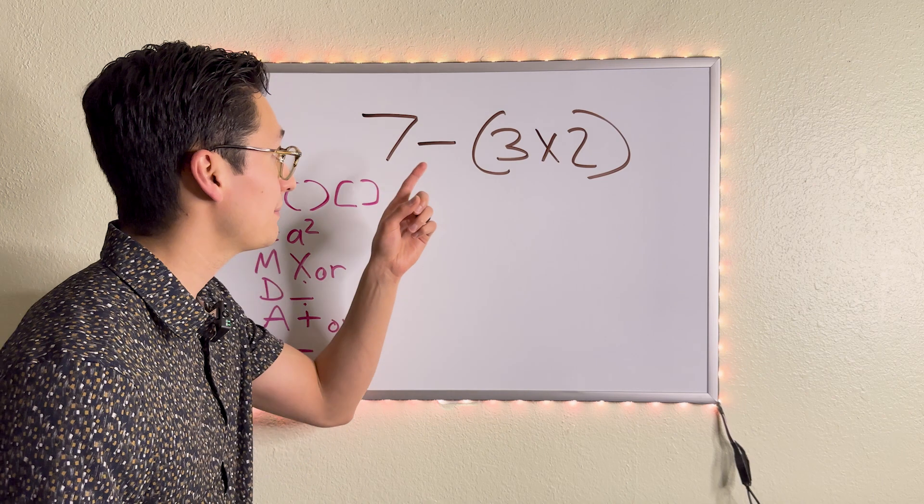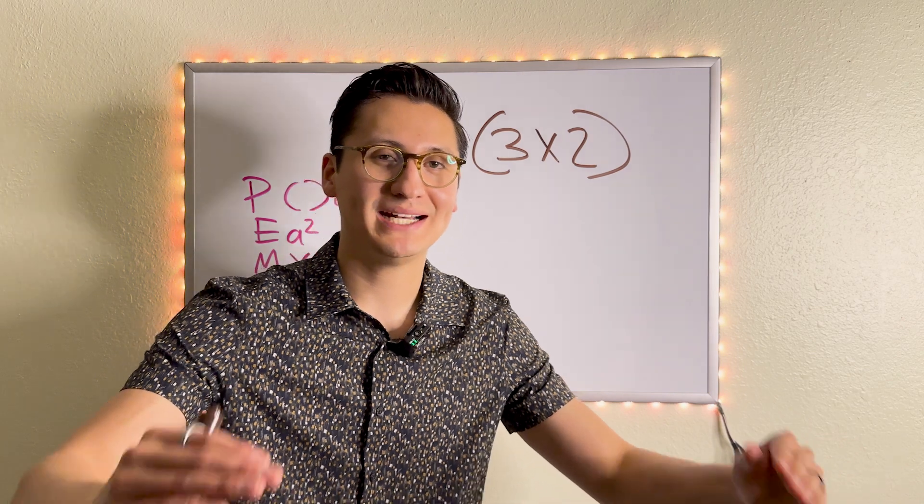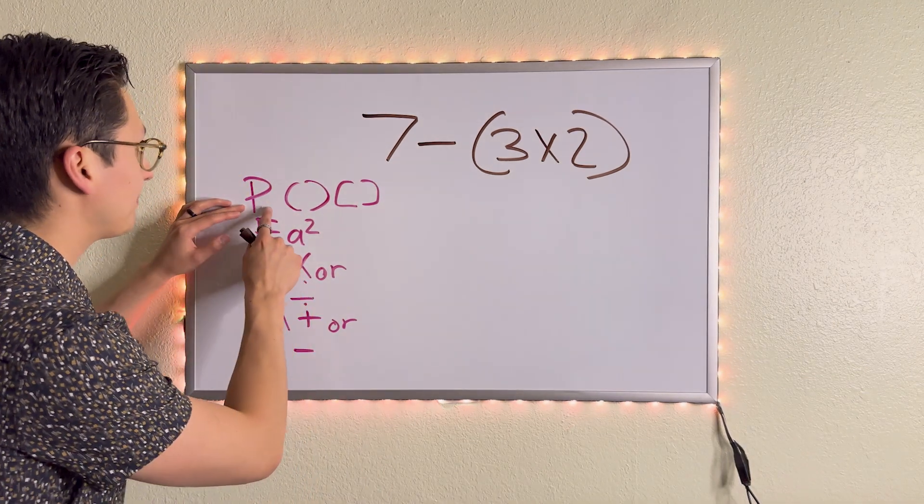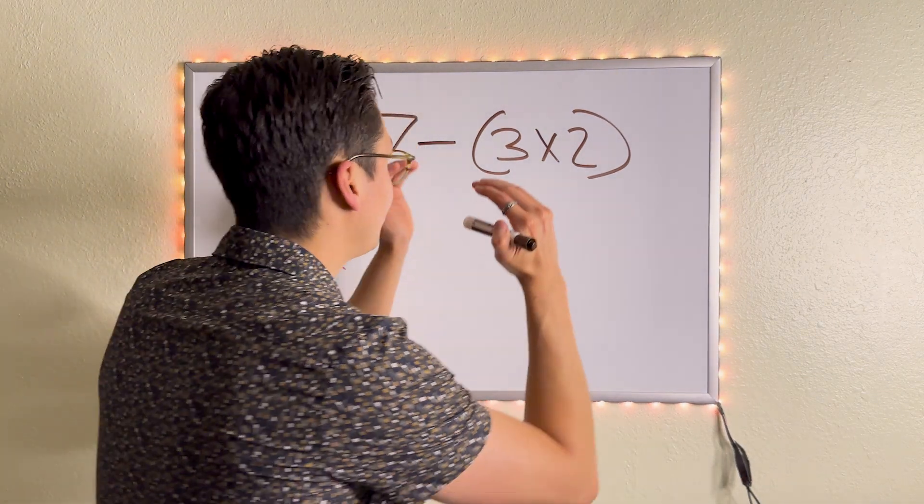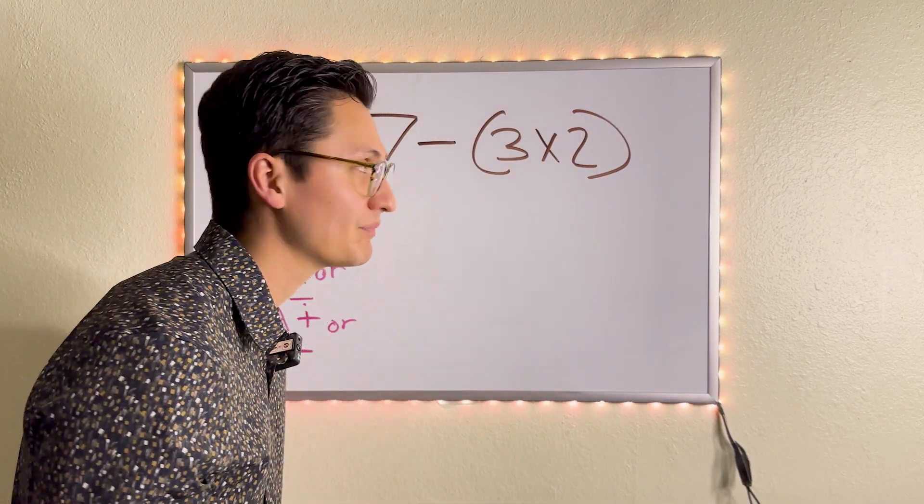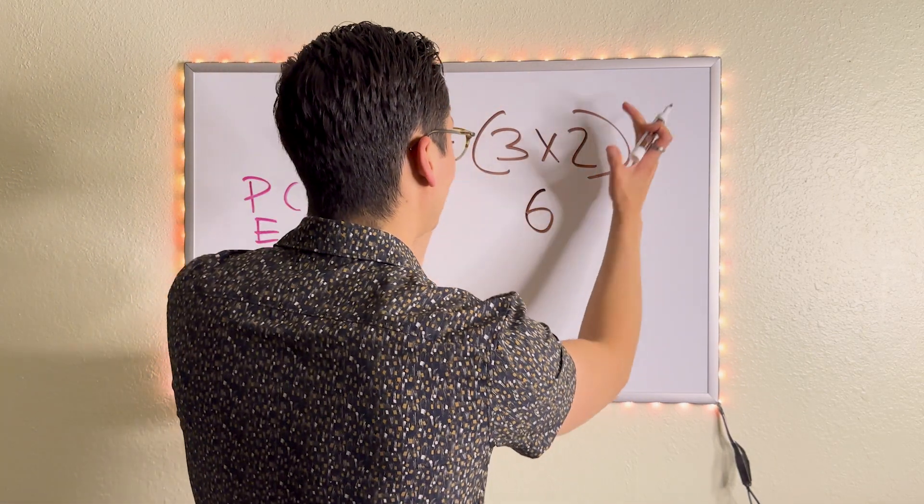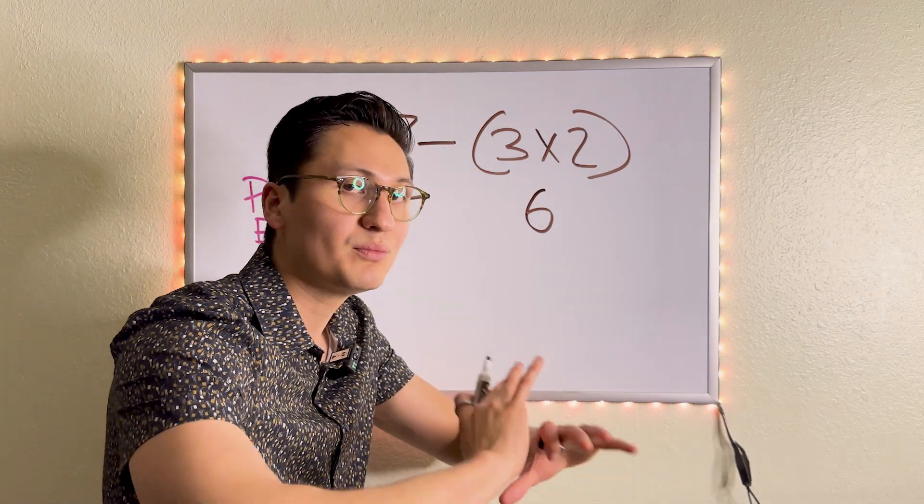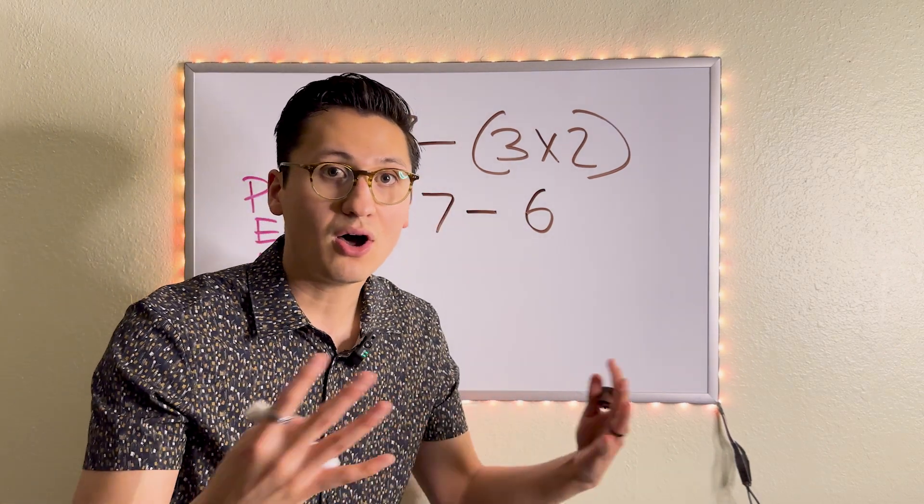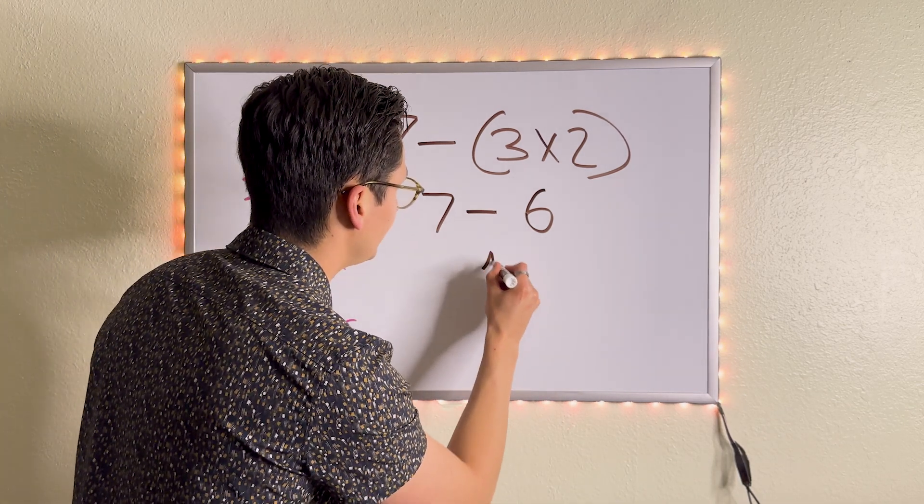Now we have seven minus parentheses, three times two parentheses. Now don't be scared. Don't be afraid. We're going to take it step by step and you're going to see how easy this problem is. So do we have any parentheses in our equation? Yes, we do. So we're going to focus exactly what is in the parentheses, and what is inside is multiplication. So we're going to do three times two is six and there's nothing left to do in the parentheses. Therefore, we can leave them alone. We no longer have to worry about them. We bring the subtract down and we bring the seven down. And guess what? All we have to do now is subtract. There's nothing else to do. So seven minus six is going to equal one.